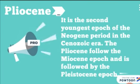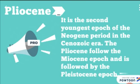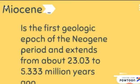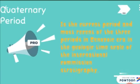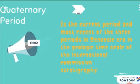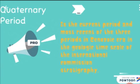The Pliocene Epoch is the second youngest epoch of the Neogene Period in the Cenozoic Era. The Pliocene followed the Miocene Epoch and is followed by the Pleistocene Epoch. The Miocene Epoch is the first geologic epoch of the Neogene Period, extending from about 23.03 to 5.33 million years ago. The Quaternary Period is the current and most recent of the three periods in the Cenozoic Era, according to the geologic time scale of the International Commission on Stratigraphy.